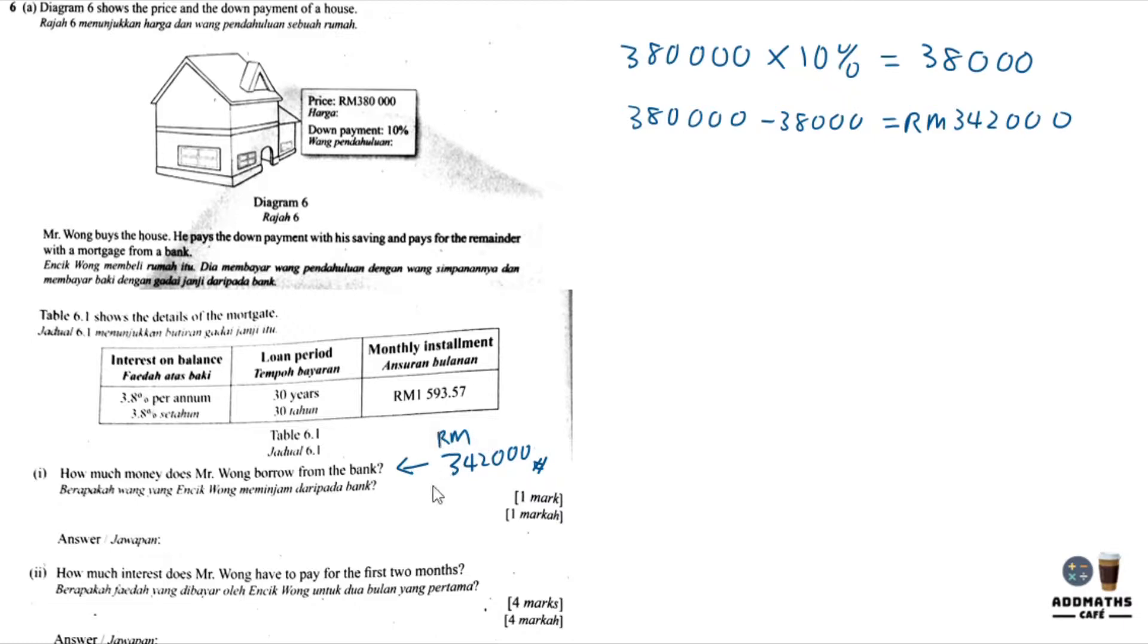This is for part one. For question A2, as we know the interest here is not simple interest, we know it's a compound interest. So let's calculate the first month interest first. It is very hard, so you have to do it slowly.